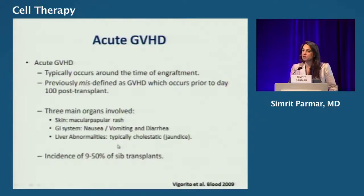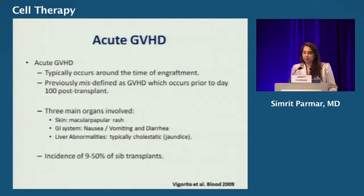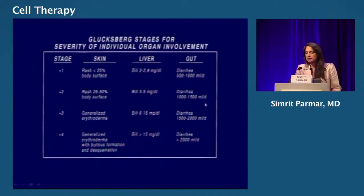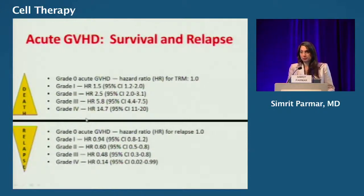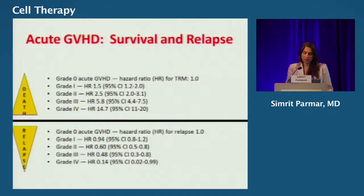The incidence of graft-versus-host disease is very variable depending upon the source of the transplant, the type of conditioning, the type of immune suppression, and whether the graft is T cell depleted or not. There is a complex grading system based on individual organ stages. The thin line we walk is: as the grade of GVHD goes up, the risk of death goes up, but the risk of relapse goes down. How do we maintain a regimen that overcomes the risk of relapse but still prevents GVHD?